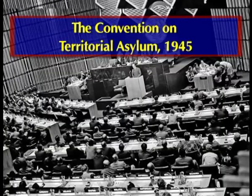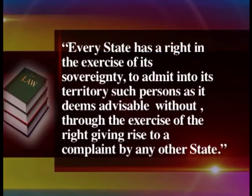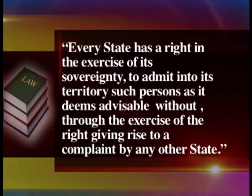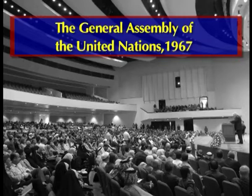The Convention on Territorial Asylum was signed in 1945. Article I of the Convention states that every state has a right in the exercise of its sovereignty to admit into its territory such persons as it deems advisable, without through the exercise of that right giving rise to a complaint by any other state. In 1967, the General Assembly of the United Nations recommended that states in practice should do the following.